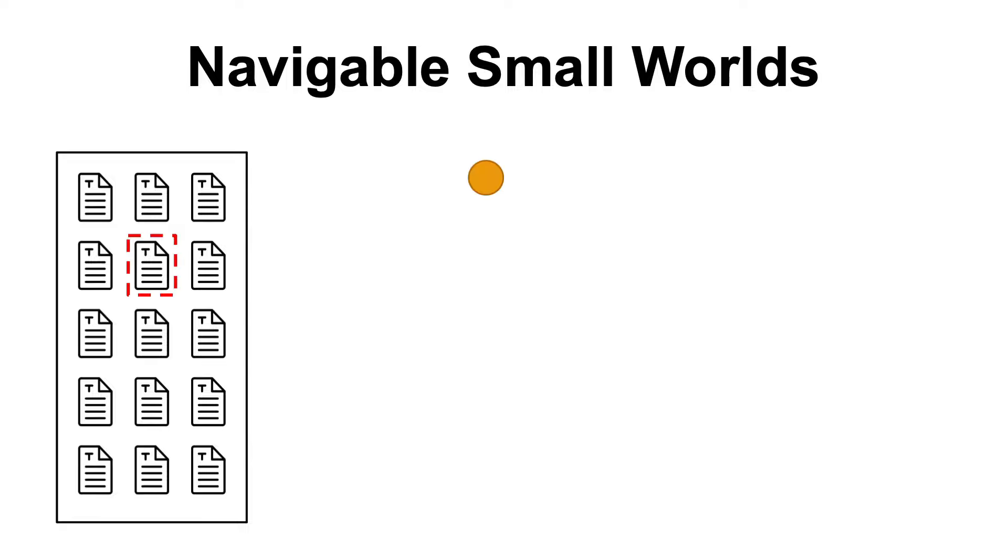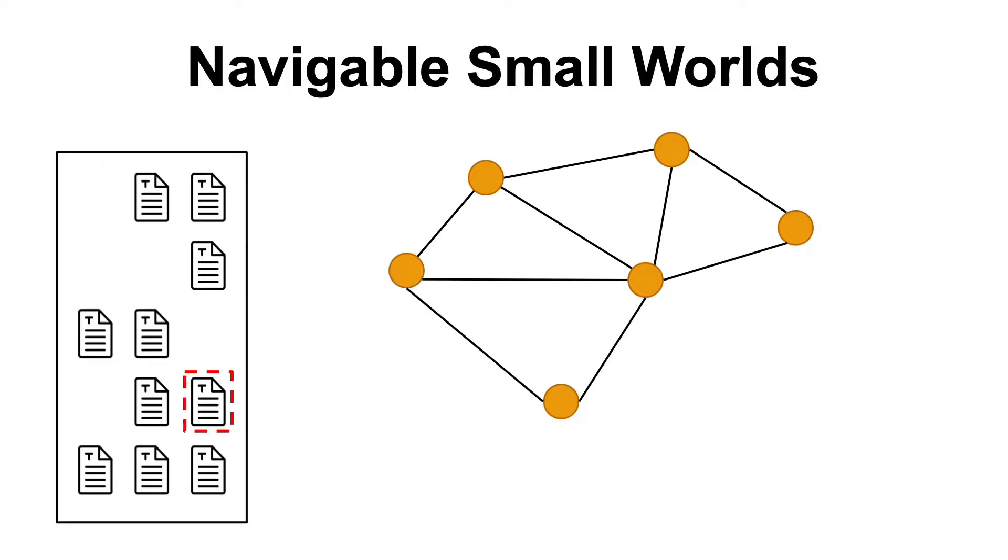We construct a navigable small world graph by simply connecting each document to its k most similar neighbors in an iterative way. So, we pick a document from the database and add it to the graph. Then we pick another document, find the closest k documents to that document, which right now is only the previous document we have added, so we link the two. Then we add another document and connect it again with the k nearest documents we have added so far. And we repeat this step again and again, until we have added all the documents in the database to our graph.